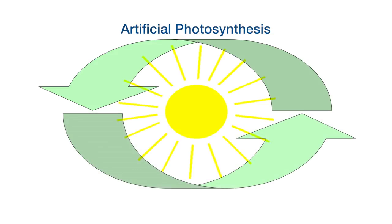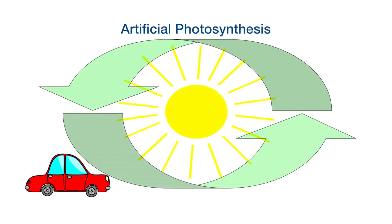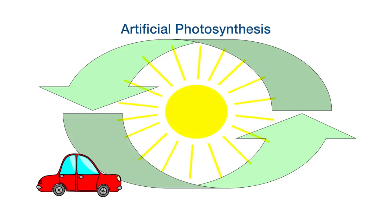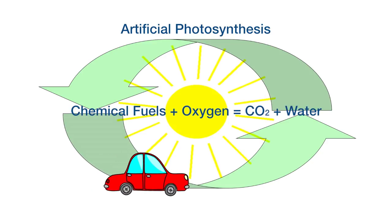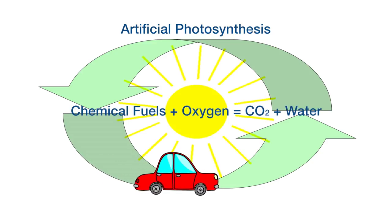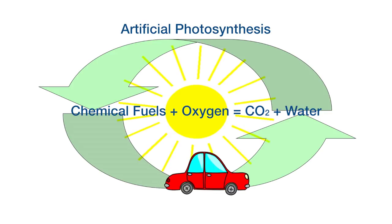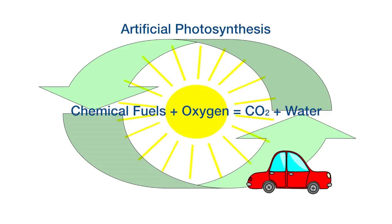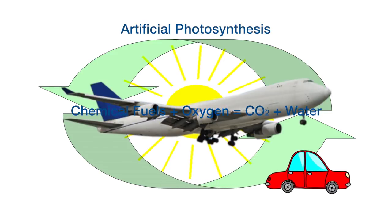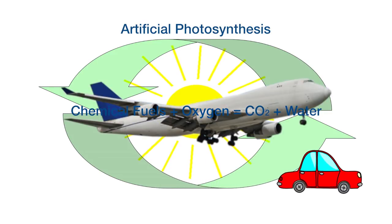Every day when we are driving our car, we are basically burning the gasoline, using its energy, and releasing CO2 and water back into the environment. And this artificial photosynthesis technology can turn this CO2 and water back into chemical fuels using sunlight.